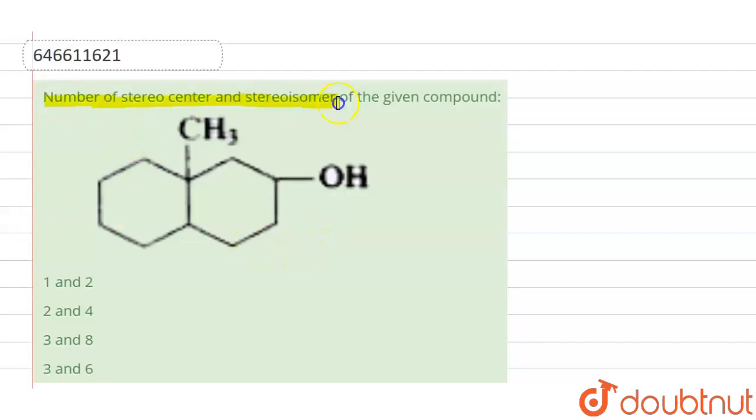The question is: number of stereocenter and stereoisomer of the given compound. We have to tell the stereocenter and stereoisomer.